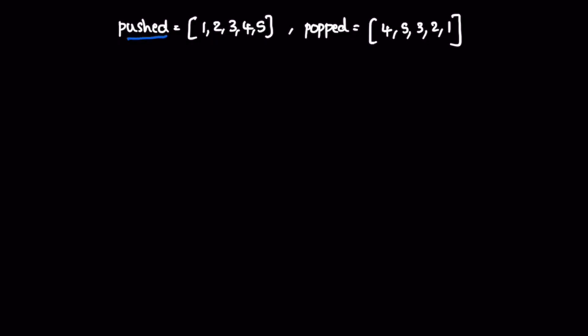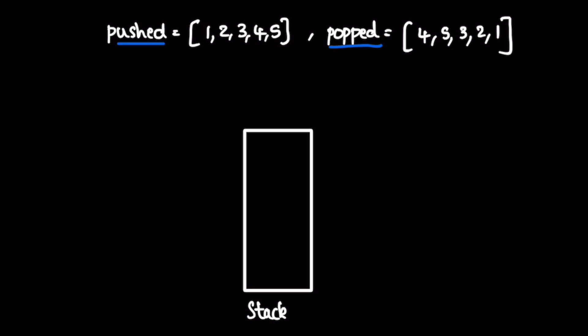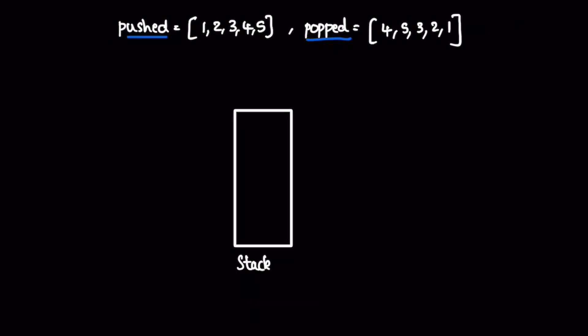Let's take the given example. This is the pushed array and this is the popped array. We start with an empty stack. We push elements until we see the topmost element from the popped array, iterating left to right. Stack is last in, first out — so we add one, two, three, four. Now four equals the first popped element, so we pop four and increment j.